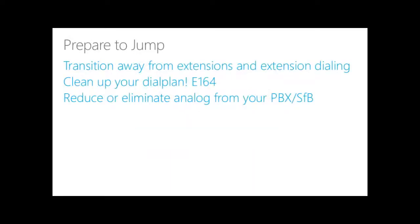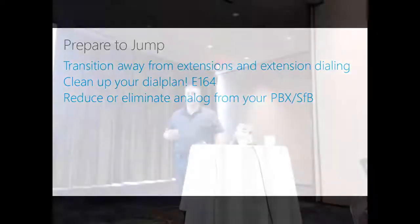Preparing to jump: some things you can do before deploying a hybrid infrastructure. First — and I recommend this for all Skype deployments — start transitioning away from the concept of extensions. There is no support for extensions in the cloud. In the cloud your only option is to set up a dial plan so that when a user dials 1234, Skype translates it to +1-604-555-1234 — it's more of a short code or speed dial than a true extension. Clean up your dial plans, move to E.164 format, and get rid of analog.